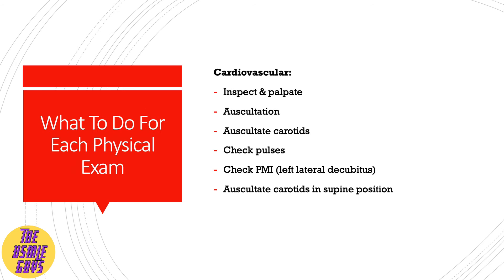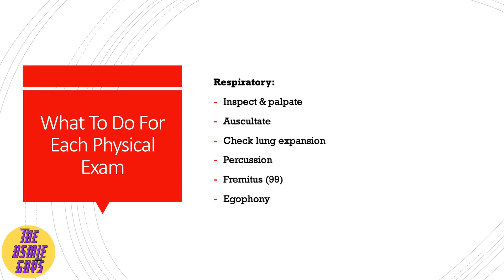For a focused cardiovascular exam: inspect and palpate, auscultate, auscultate the carotids, check pulses, check the PMI in the left lateral decubitus position, auscultate the carotids in the supine position, and check for JVD. For the respiratory system: inspect, palpate, auscultate, check for lung expansion, do percussion, do fremitus, and check for positive egophony.